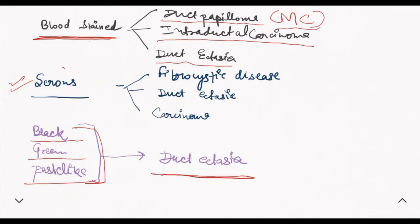Intraductal carcinoma also occurs, but the most common cause of blood-stained discharge is duct papilloma. Serous discharge is most commonly due to duct papilloma. If colorful nipple discharge occurs, the most common cause is duct ectasia.